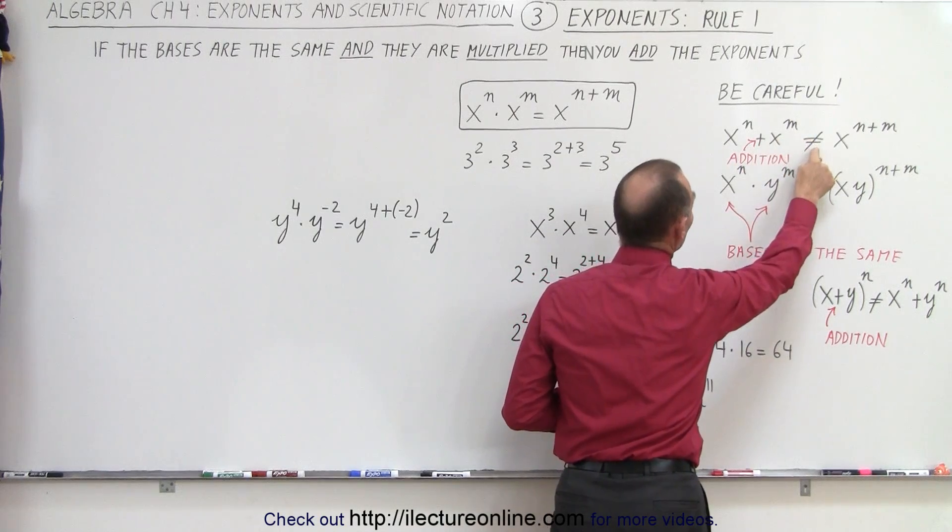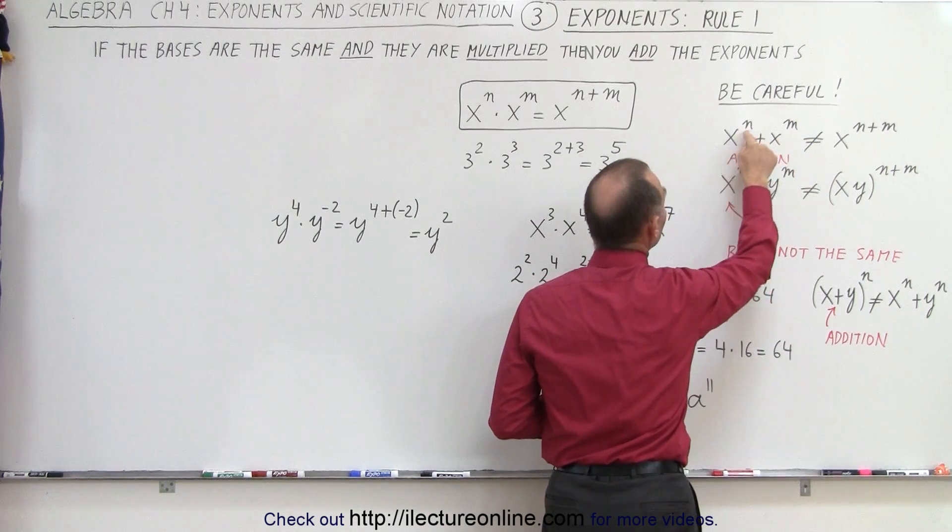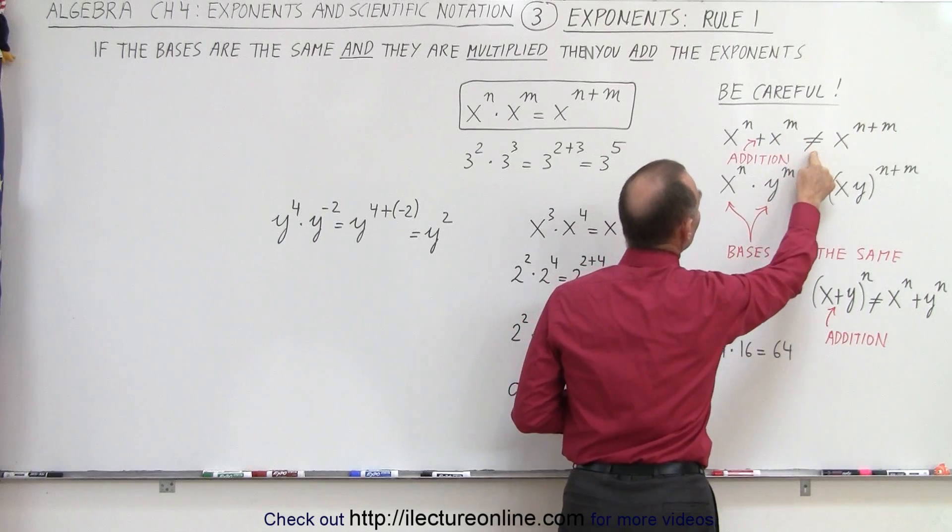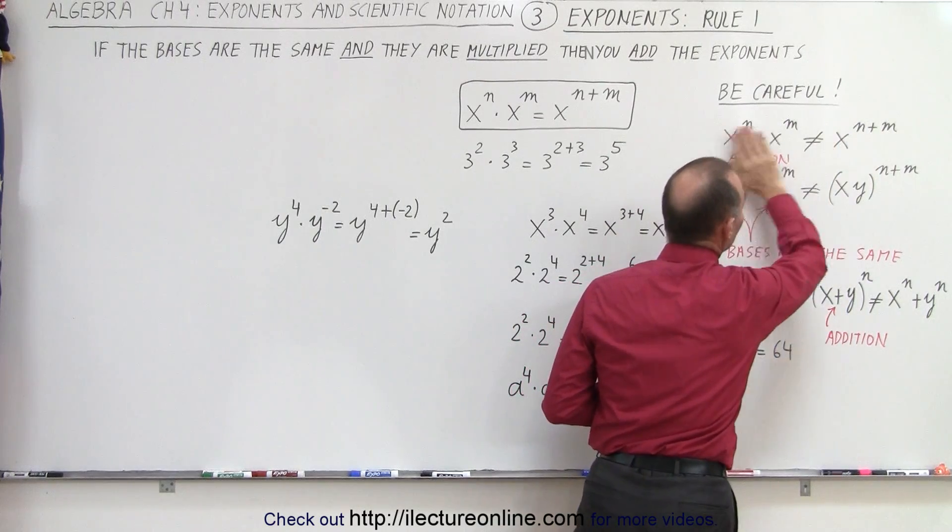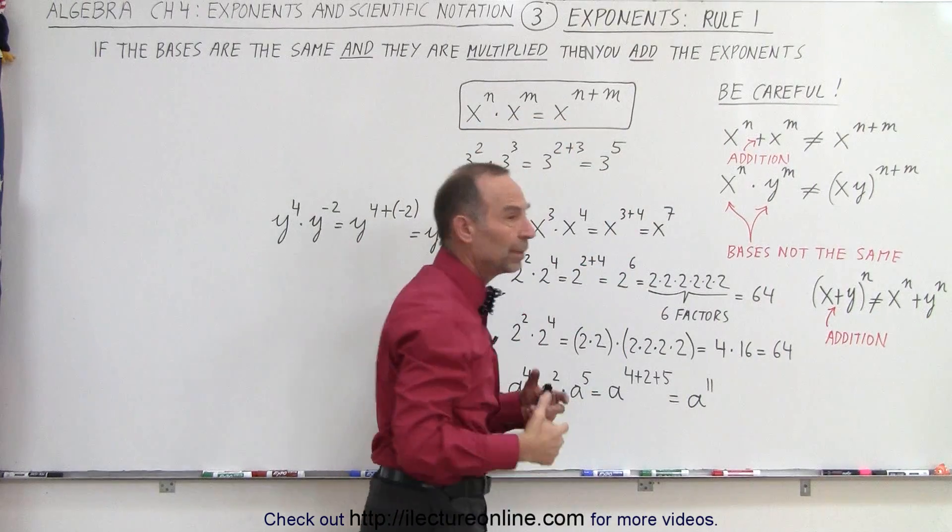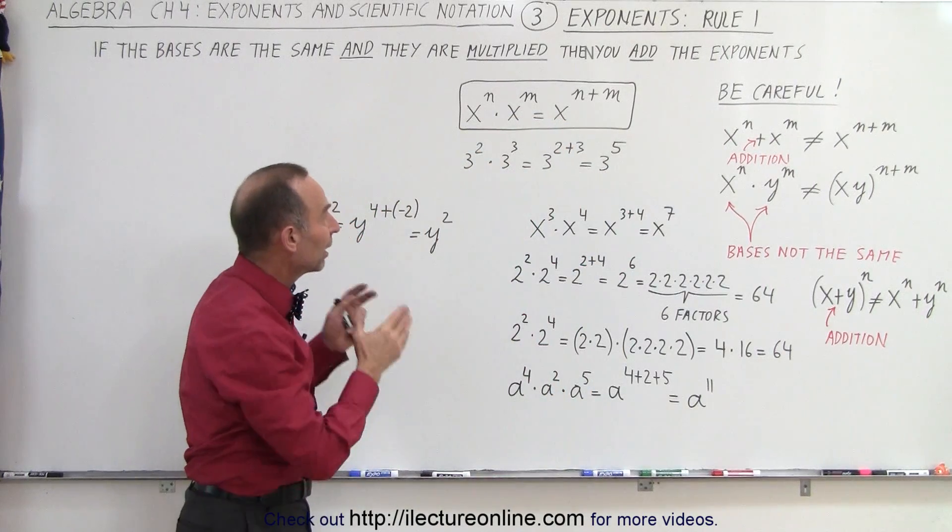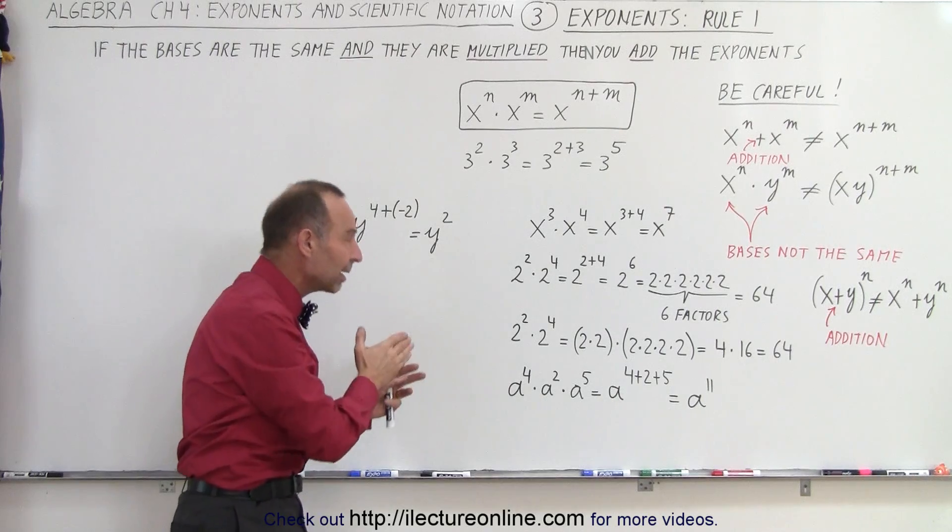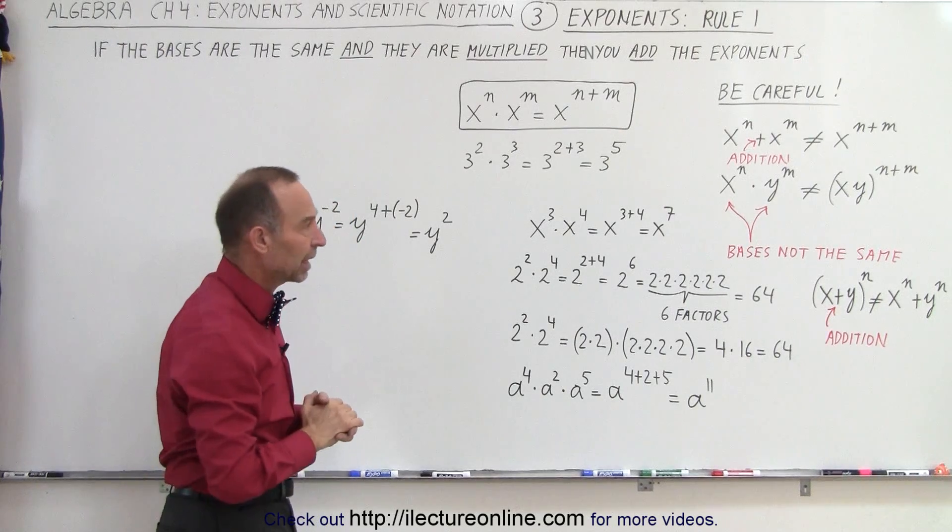You cannot say that x to the n plus x to the n is equal to x to the n plus m. That is not the case because it's an addition instead of a multiplication. For that rule to be exercised and used, it must be x to the n times x to the n. It must be multiplication.